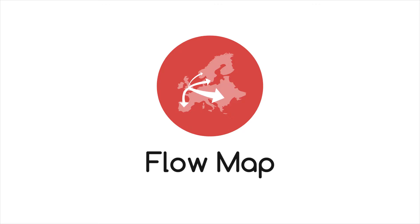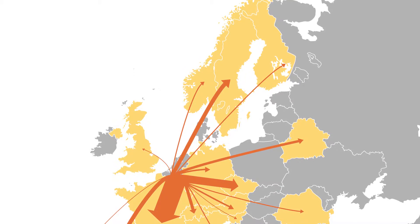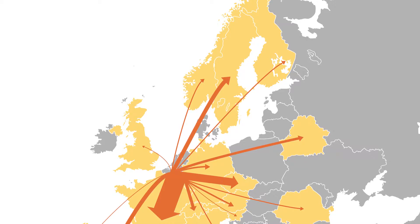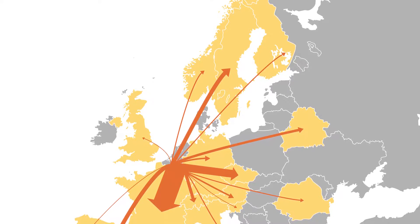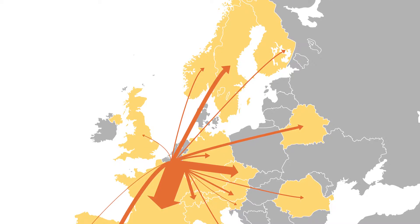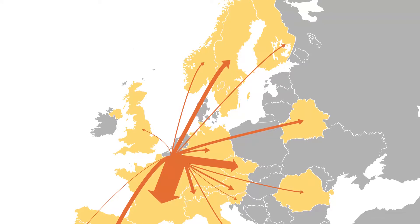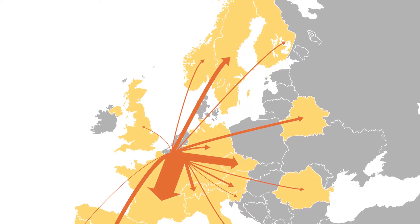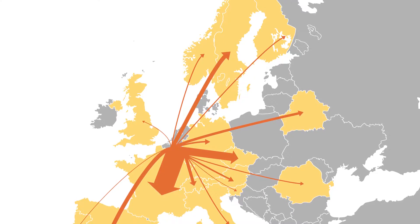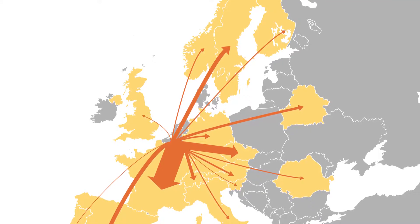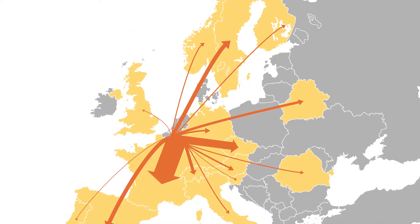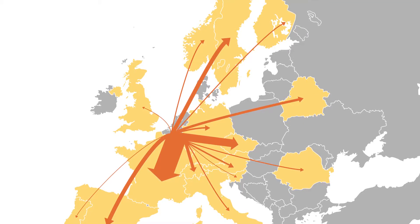Let's look at flow maps. Flow maps geographically show the movement of information or objects from one location to another and their amount. Typically, flow maps are used to show the migration data of people, animals, and products.